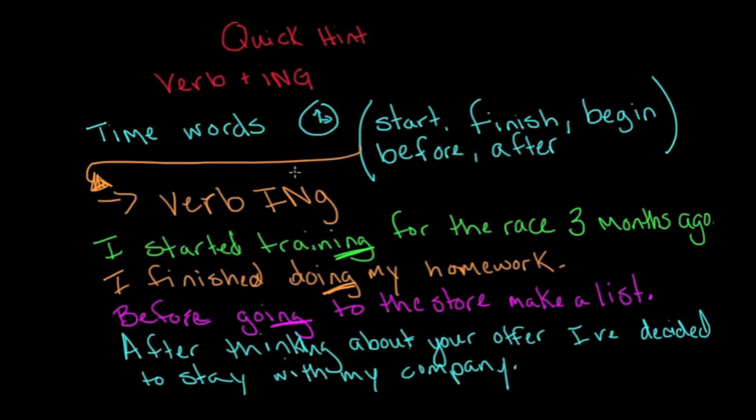So if you can remember that when we're using time words, the verb that follows them is going to be in the ing form. If you can remember this one simple rule, you will have a lot less mistakes when you're speaking and you will be a lot more certain about when to use the ing form.